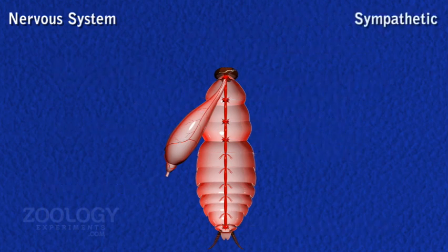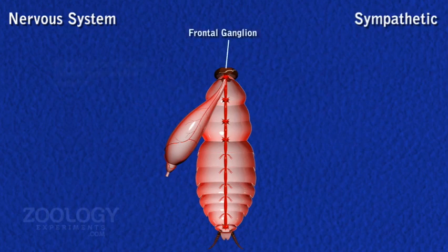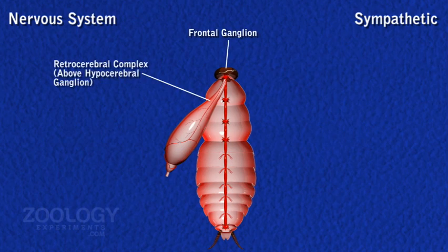Sympathetic Nervous System is comprised of four ganglia and a retrocerebral complex. A frontal ganglion lies above the pharynx in front of the brain, a hypocerebral ganglion on the esophagus, an ingluvial ganglion located on the crop, and a proventricular ganglion on the surface of the proventriculus.